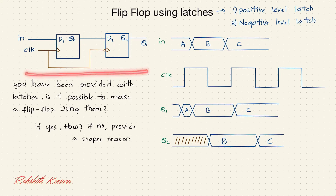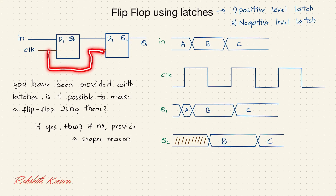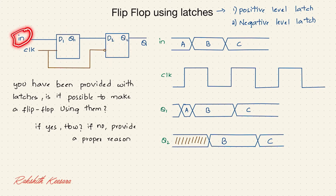If you observe this circuit, this is the first latch. The clock is connected to it — since there is no inversion sign, this is the positive level latch. The same clock is going to the second latch, which is the negative level latch. This is our input and this is the output. Now let's see the timing diagram.